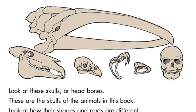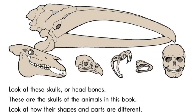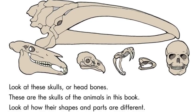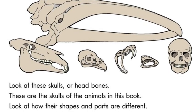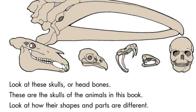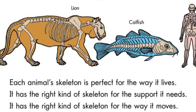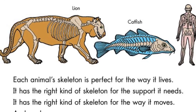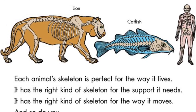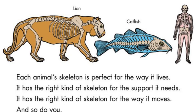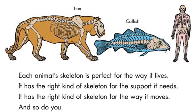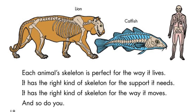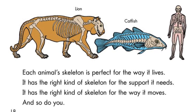Look at these skulls, or head bones. These are the skulls of the animals in this book. Look at how their shapes and parts are different. Each animal skeleton is perfect for the way it lives. It has the right kind of skeleton for the support it needs. It has the right kind of skeleton for the way it moves. And so do you.